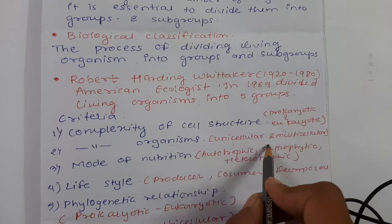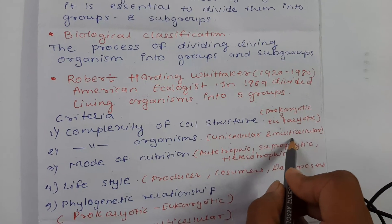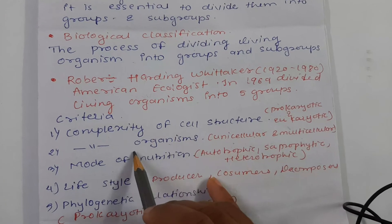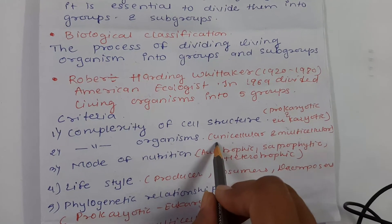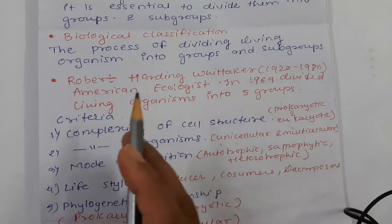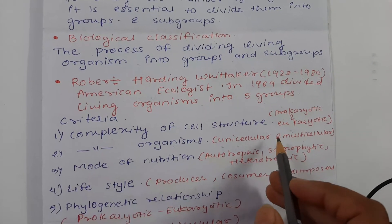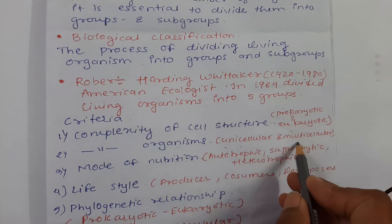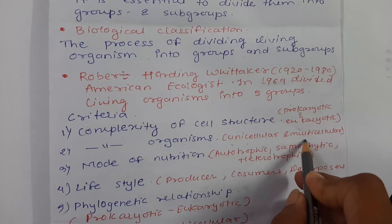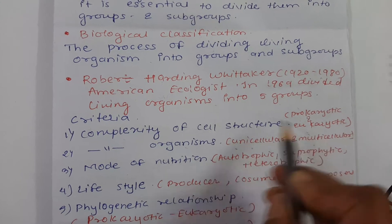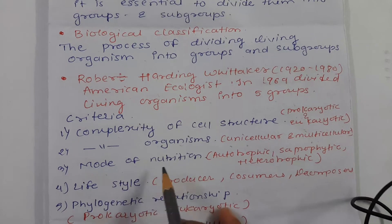The second criterion was based on the complexity of organisms — that is, whether the organism is unicellular or multicellular. Organisms that are unicellular were placed into one group, and organisms that are multicellular were placed into another group.